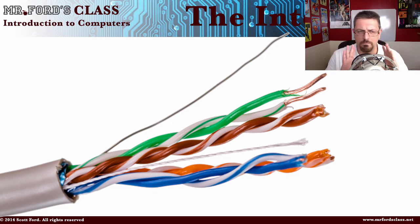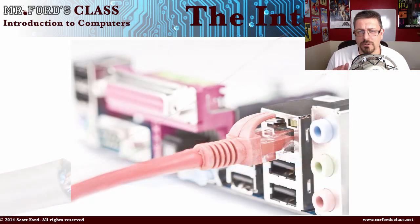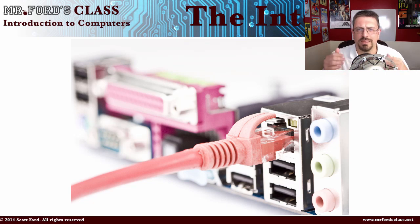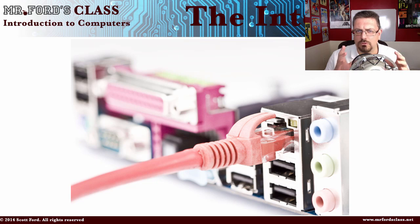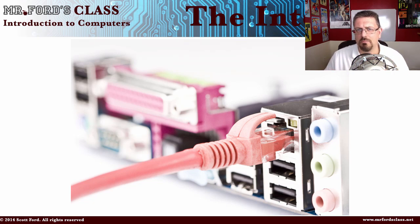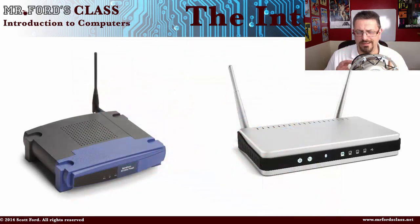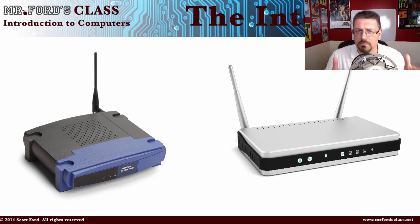If you look at the back of your computer, you might have something known as a patch cable — unshielded twisted pair cable. The cable looks like a larger telephone cord; this is your networking cable. On my Mac, for example, I don't have a networking cable connected to the back. The router, which we'll talk about in a second, is in another room broadcasting out wireless signals, and my computer is able to connect to that wireless connection.